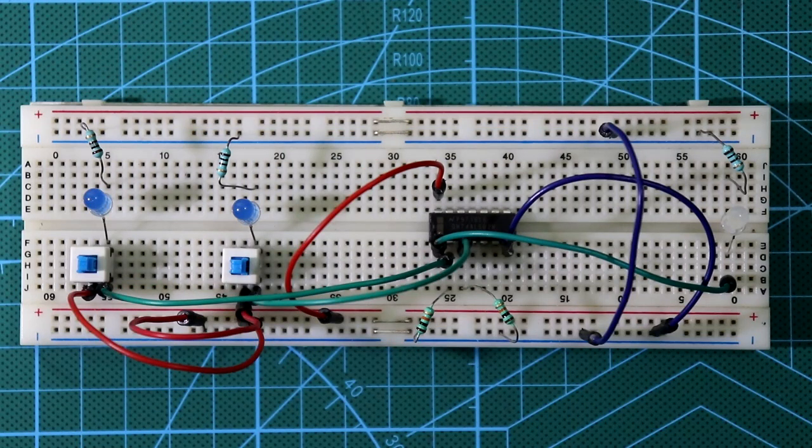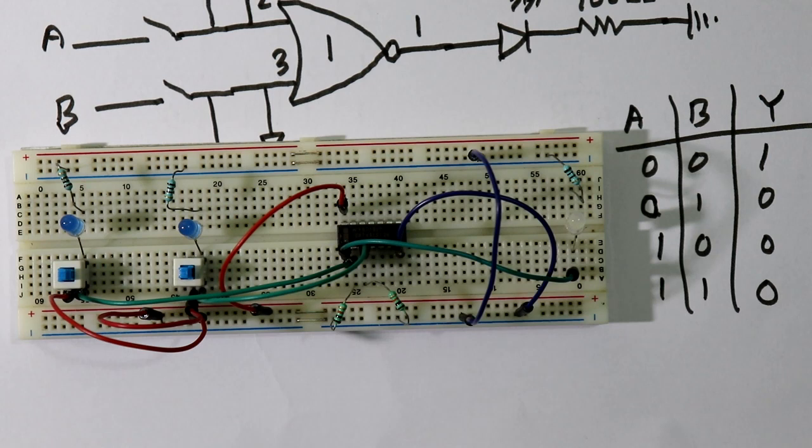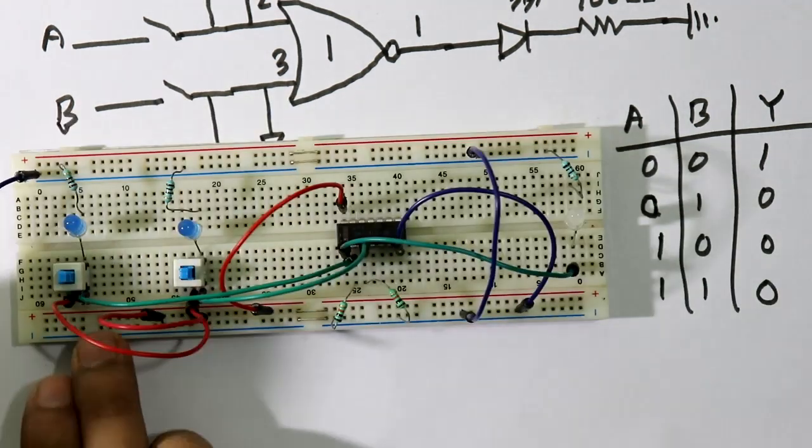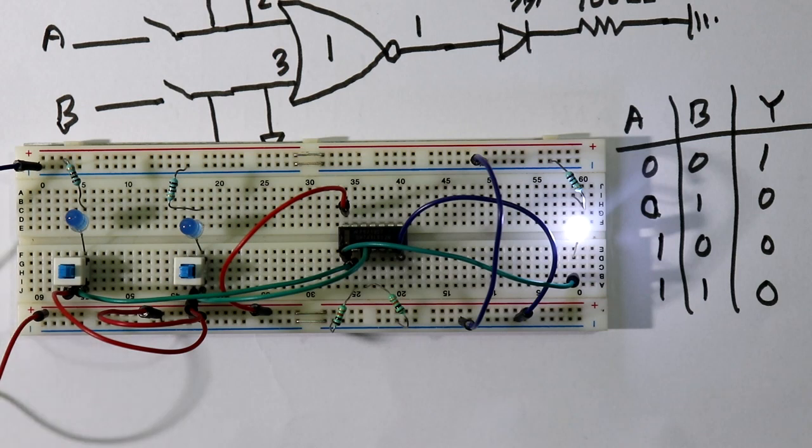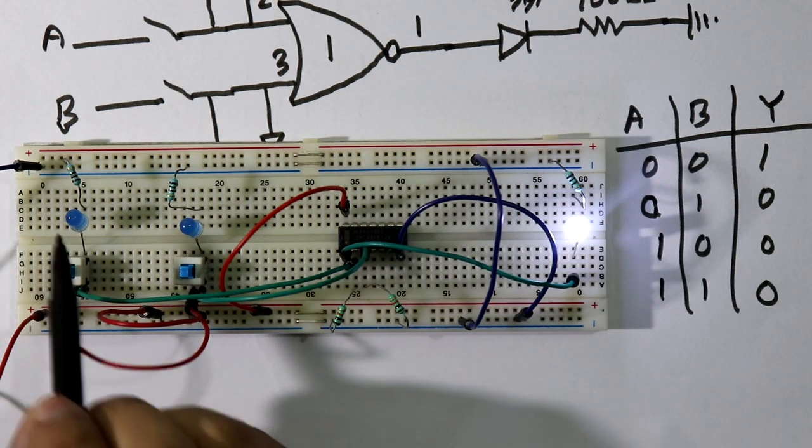Like this our circuit connection is completed. Now let's see the truth table of it. Connect power supply, here is the ground and here is the plus VCC. As per the first condition 0 0, we are getting 1, so it is correct.